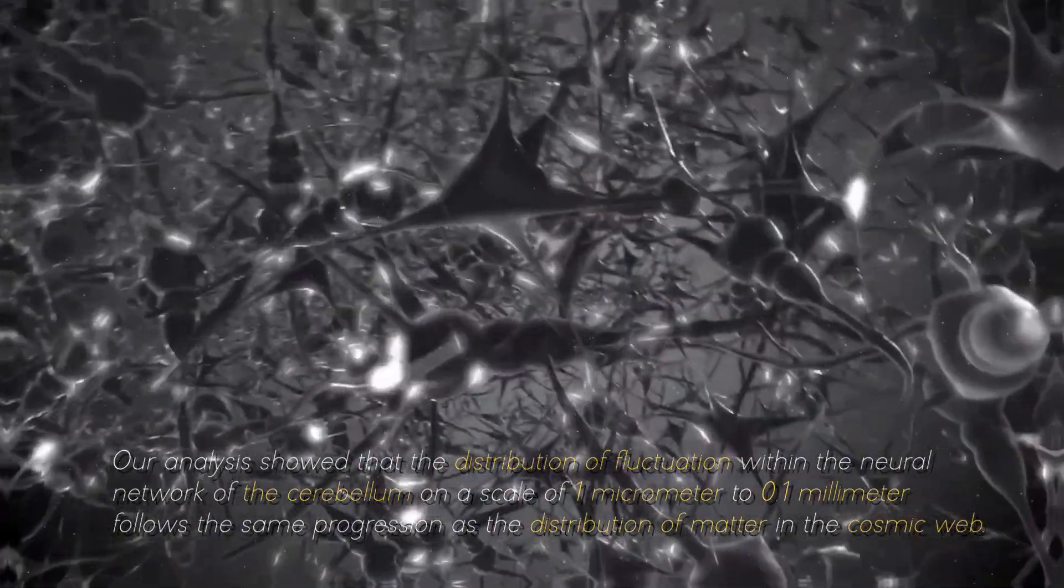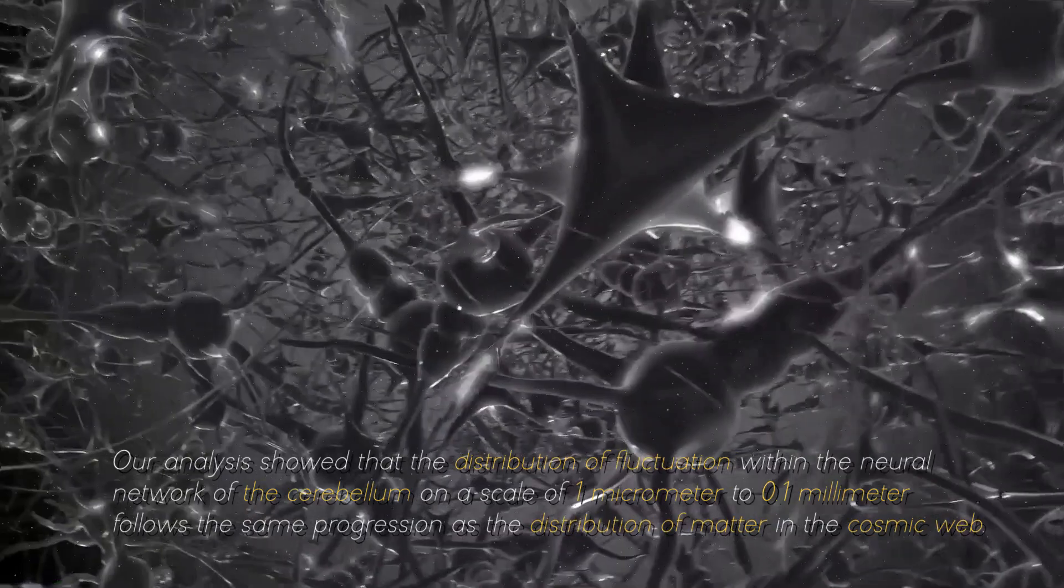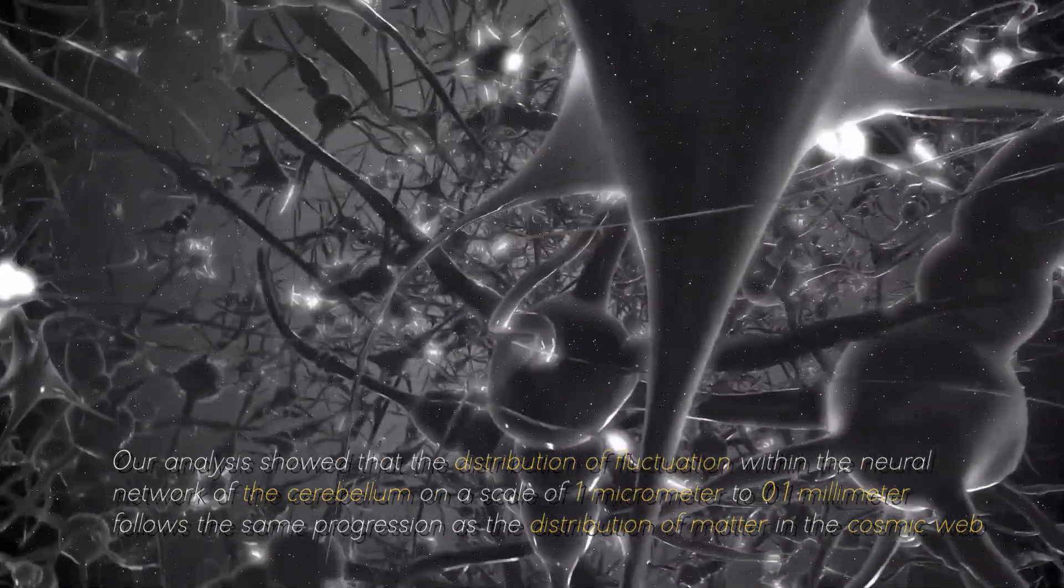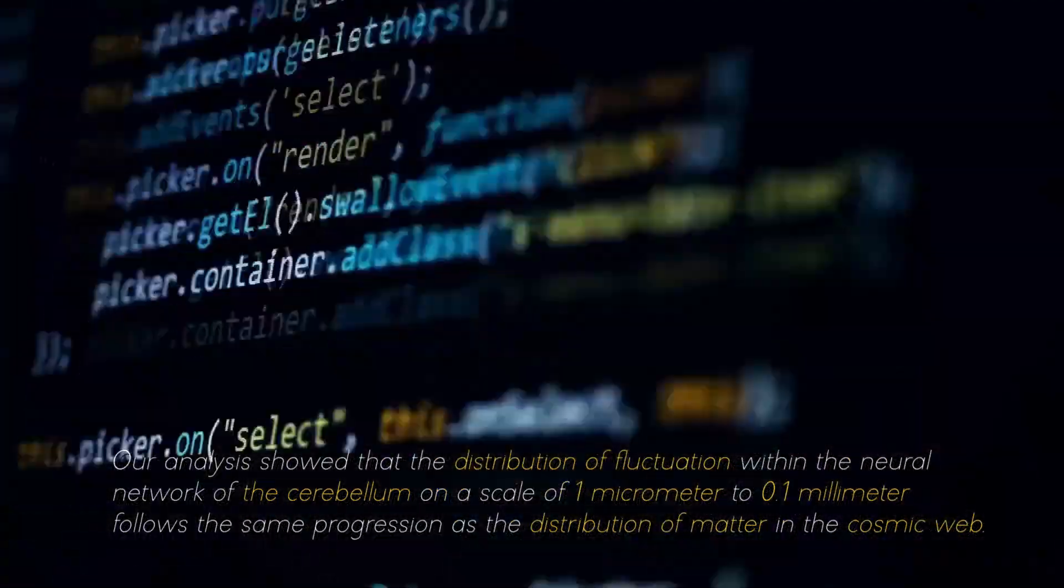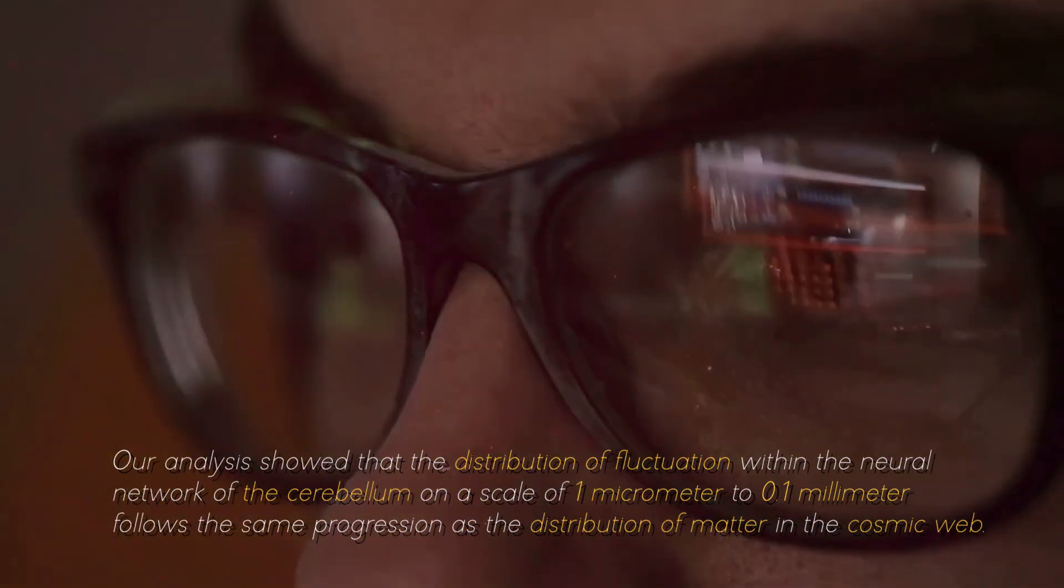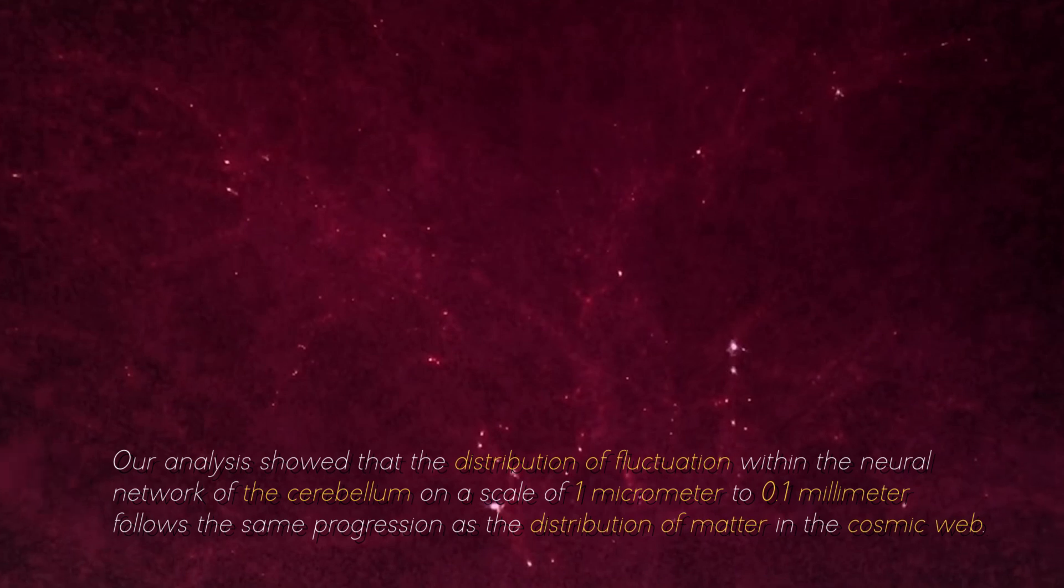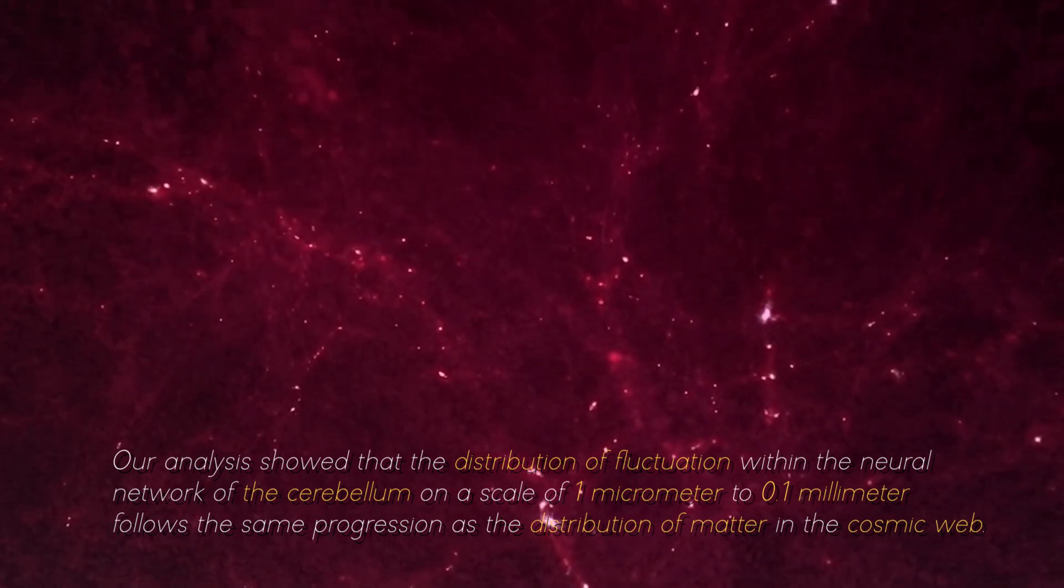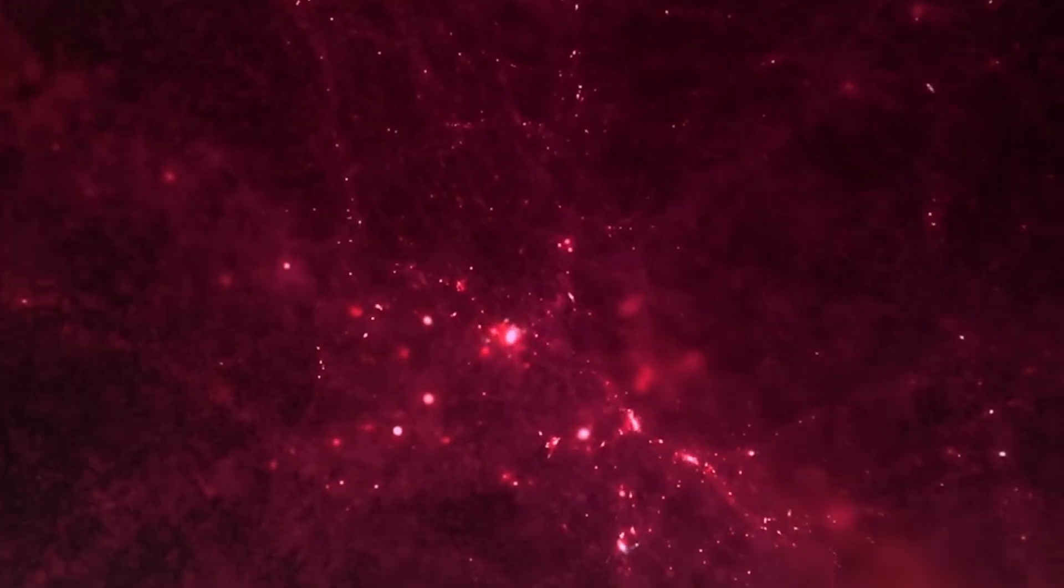Our analysis showed that the distribution of fluctuation within the neural network of the cerebellum on a scale of 1 micrometer to 0.1 millimeters follows the same progression as the distribution of matter in the cosmic web, commented one of the researchers in charge of this project.